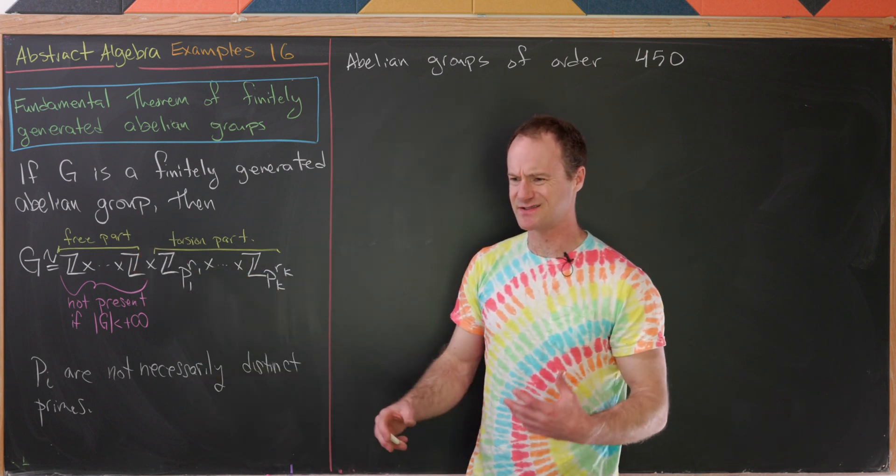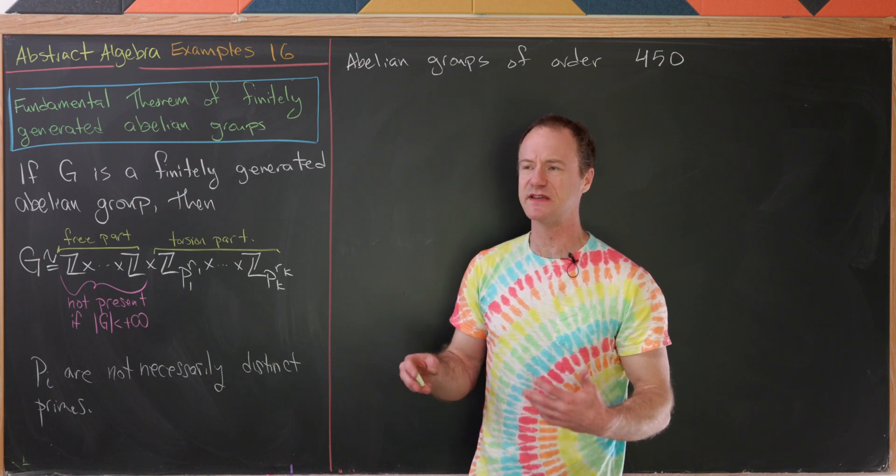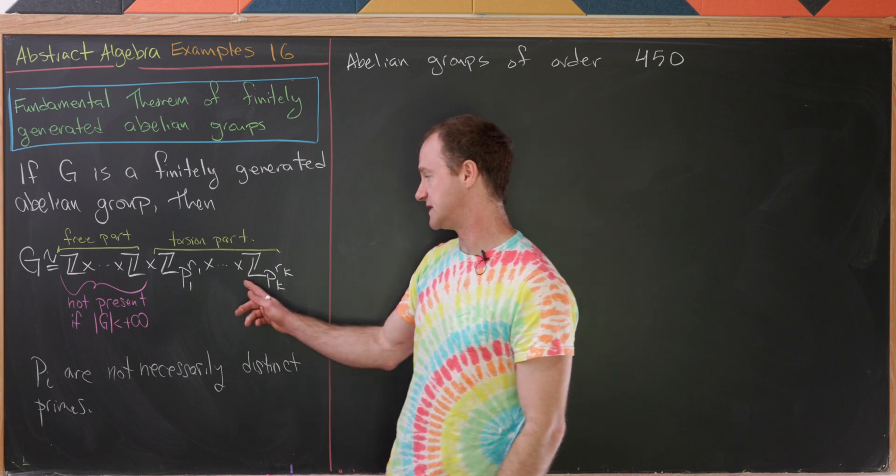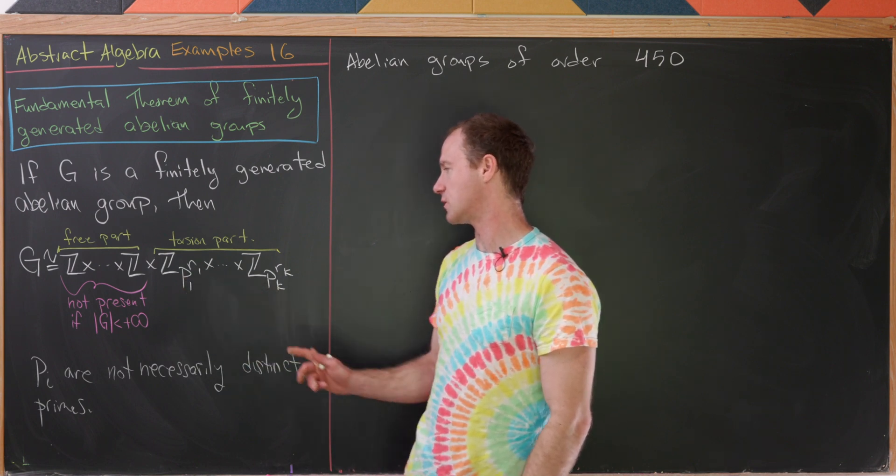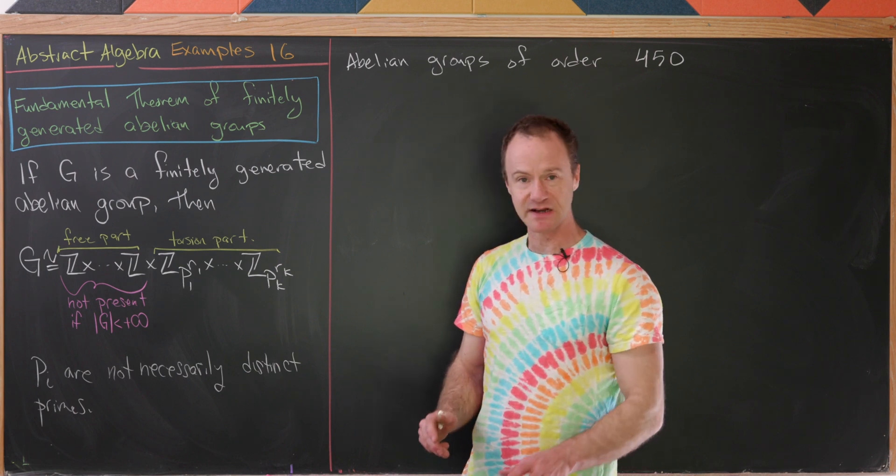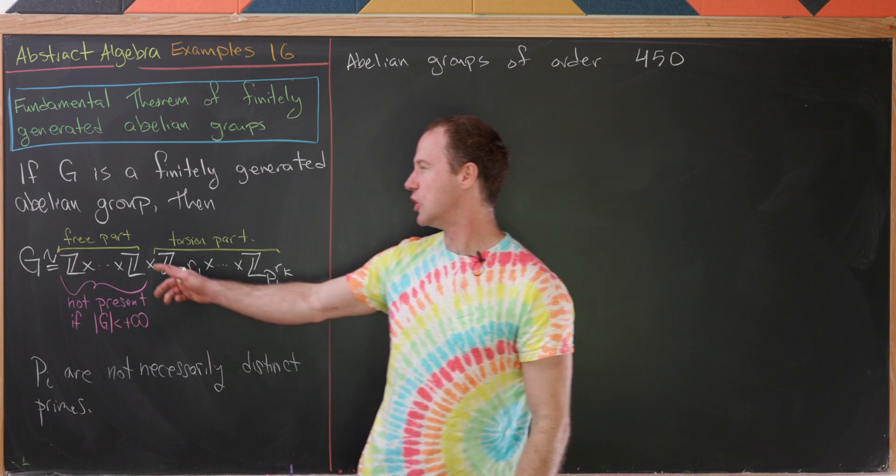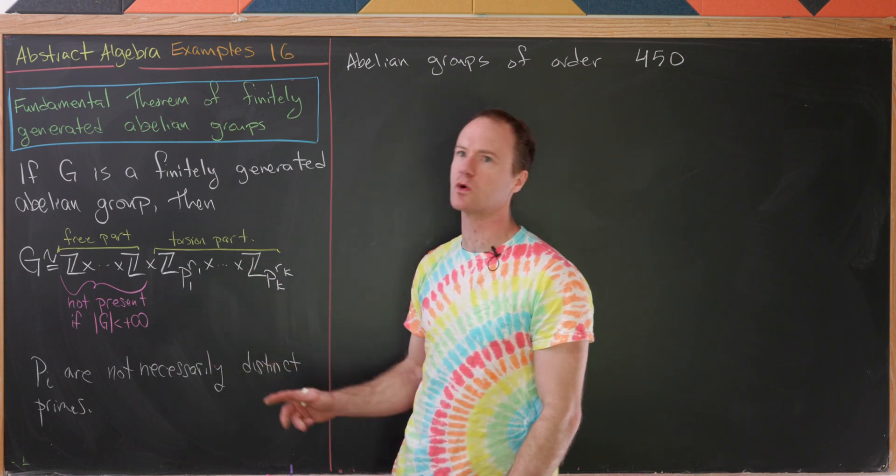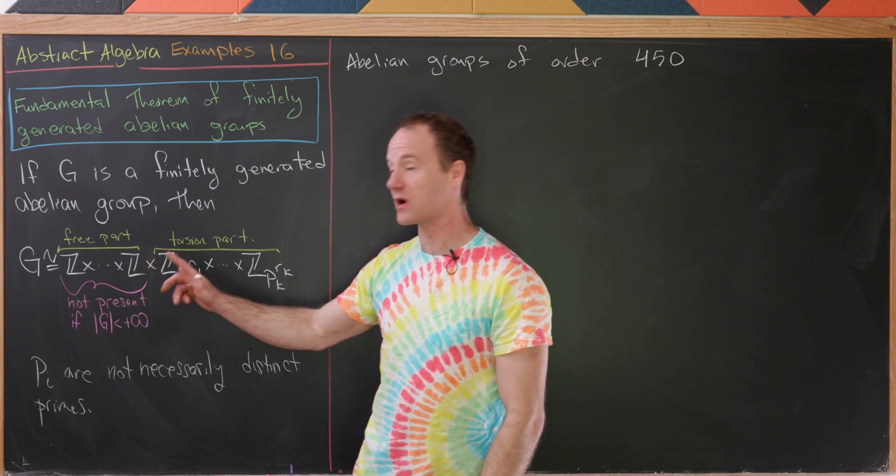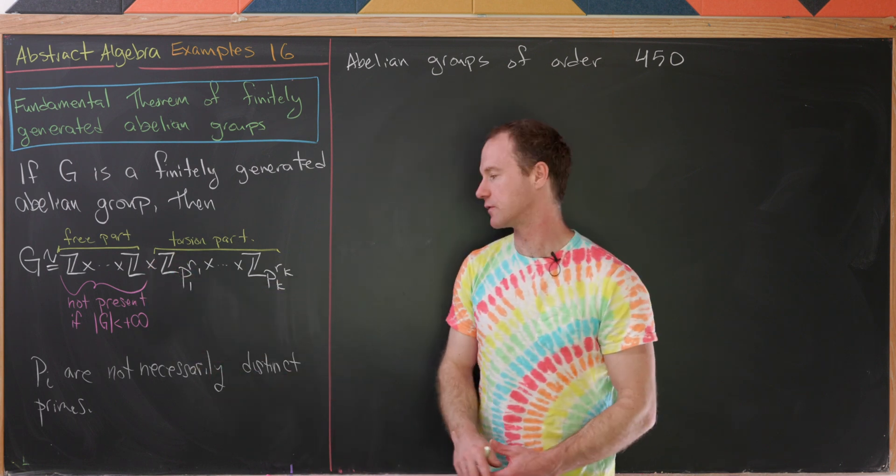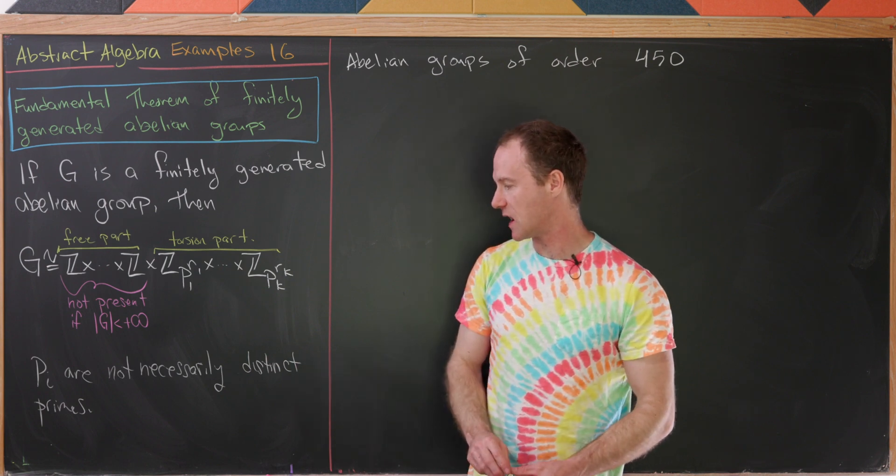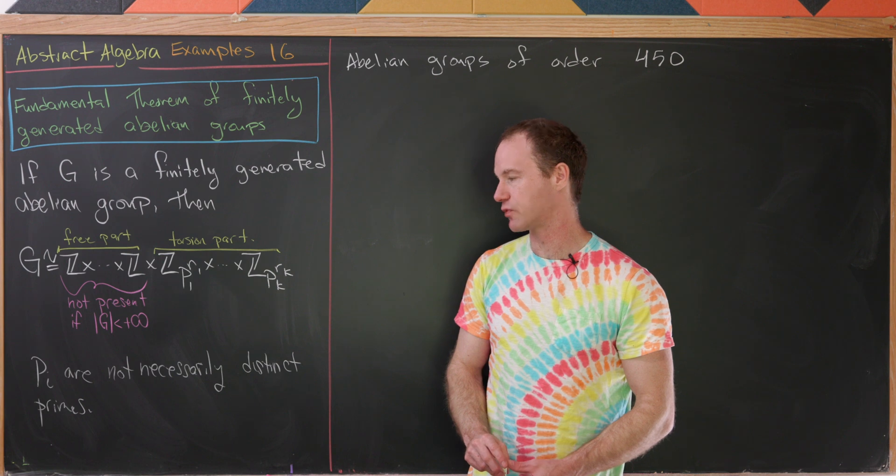That's because those are all of the portions where essentially the elements do not have finite order. Whereas this over here, the Z_P1^R1, so on and so forth, this is called the torsion part. And I'd like to point out that in the video, there was no free part, and it was just the torsion part, which means we would have a finite group. Notice if we have a free part at all, then it's an infinite group. One more thing I'd like to point out is that these Pi are not necessarily distinct primes.